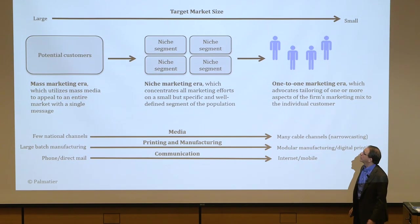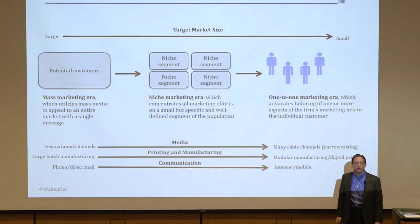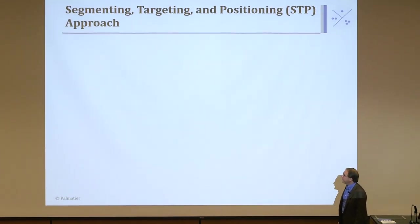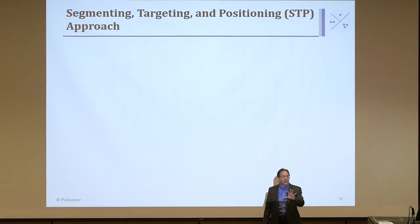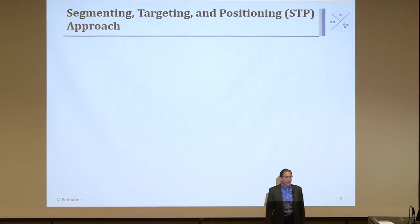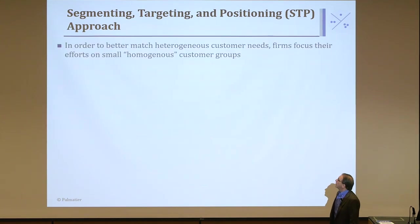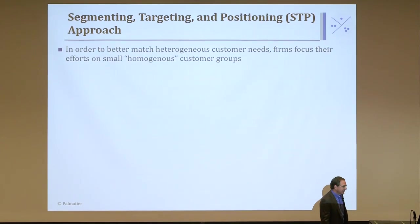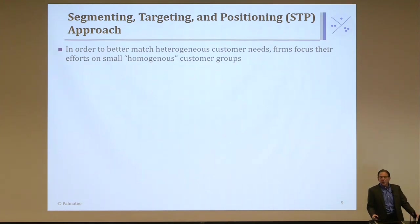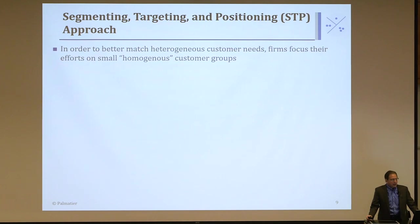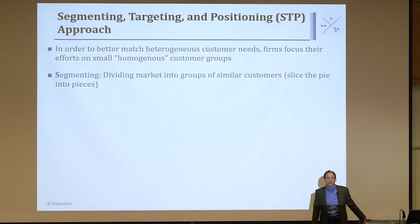So that's the evolution: the market gets smaller and smaller. We're going to go through a process called segmentation, targeting, positioning — we abbreviate that as STP. What it does is allow us to match a firm's offering to an individual segment's needs. The first part, the S of STP, is segmenting. Segmenting is dividing the customer into slices of pie. We're going to look at the automotive market.